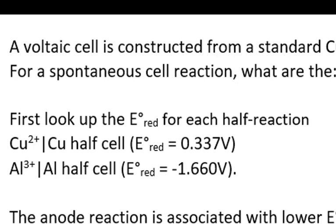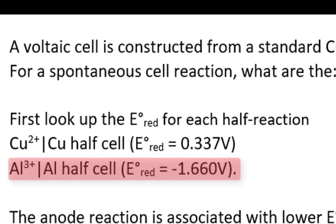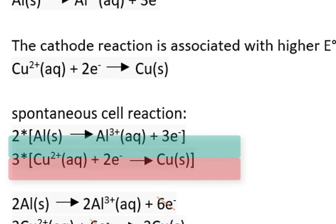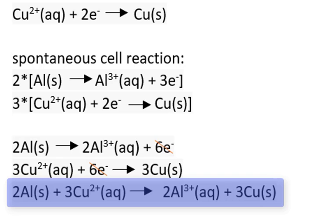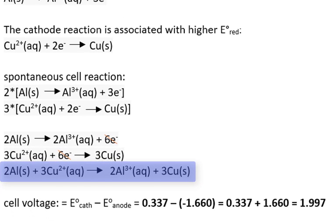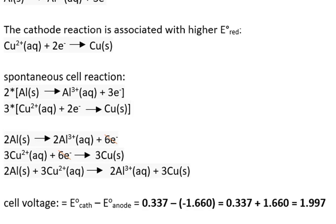This means the anode half-reaction, where oxidation occurs, is associated with the aluminum half-reaction. The cathode half-reaction is the reduction of copper ion to copper solid. To balance the combined half-reactions into a composite equation, we need to balance the electrons transferred — we multiply the aluminum half-reaction by 2 and the copper half-reaction by 3. Combining both, 6 electrons are transferred and cancel, leaving the overall redox cell reaction. The cell voltage is E cathode (positive 0.337) minus E anode (negative 1.660), giving a positive cell voltage of 1.997 volts.